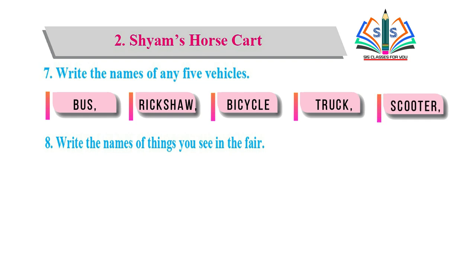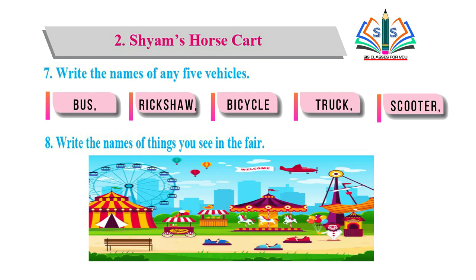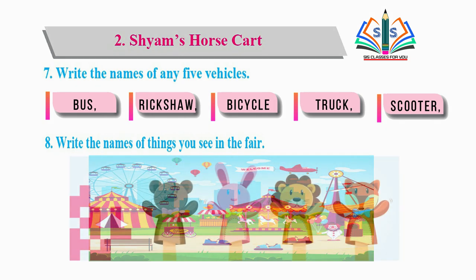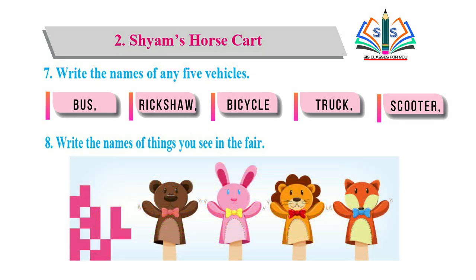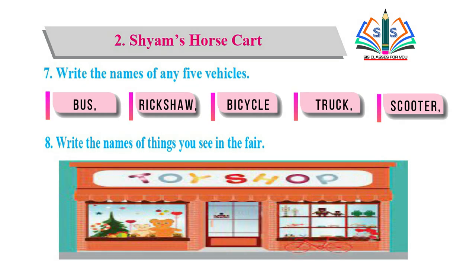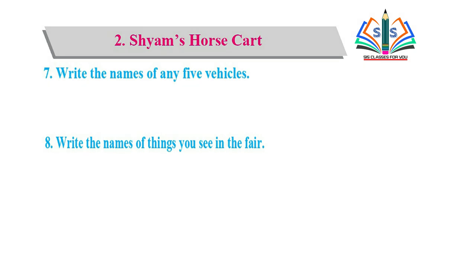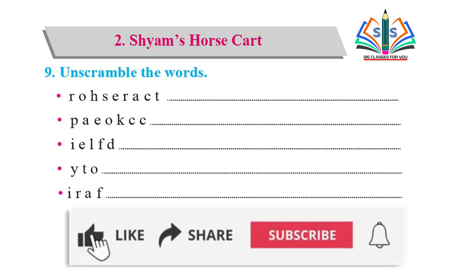Write the name of things you see in the fair. मेले में हमें कौन-कौन सी चीज़ें दिखाई देती हैं, उसके बारे में लिखना है। मेले में सबसे पहले जो दिखाई देता है: Ferris wheel, उसके बाद puppet show, toy store.